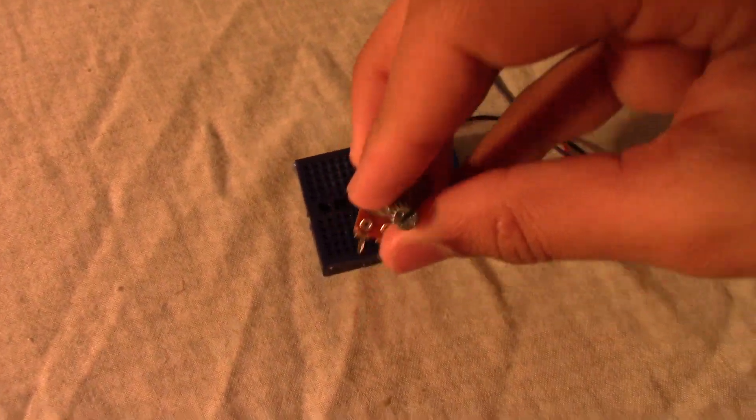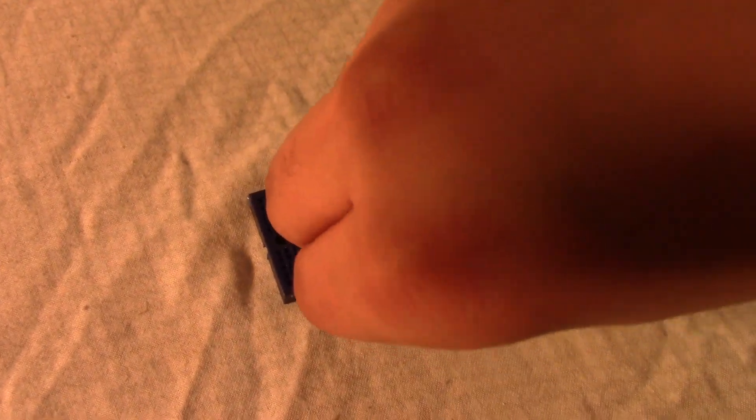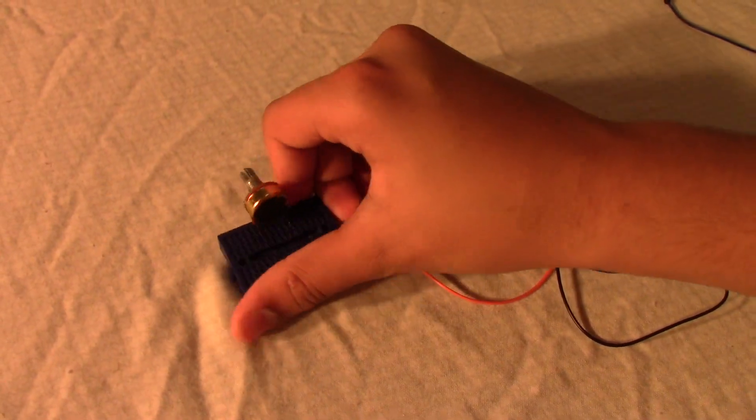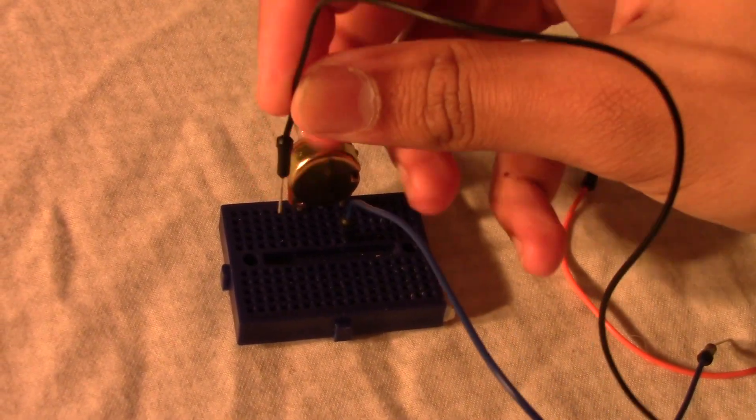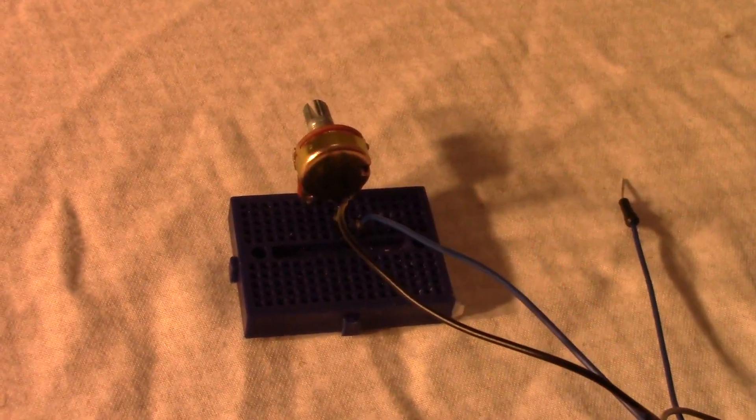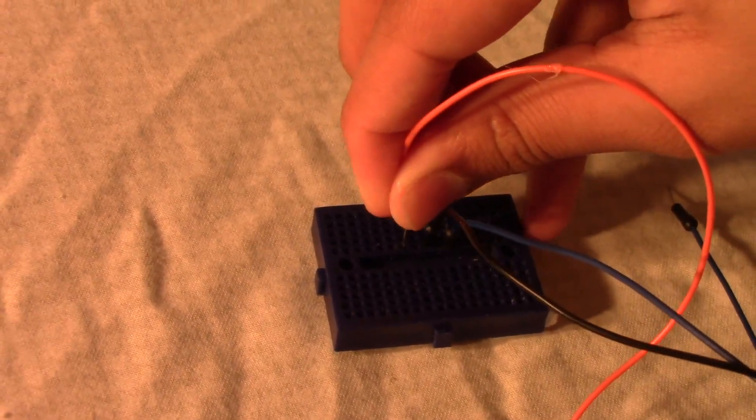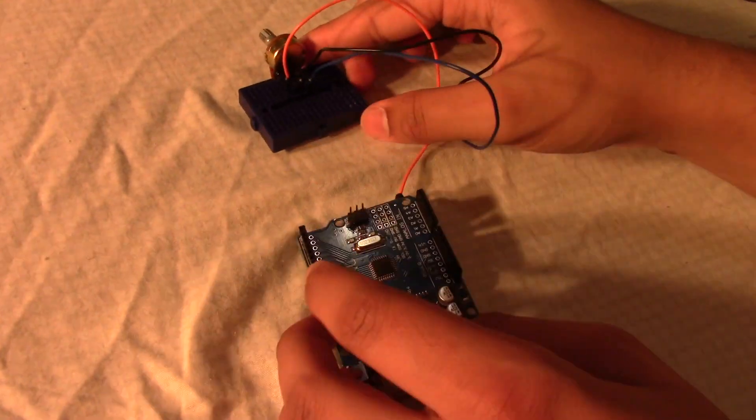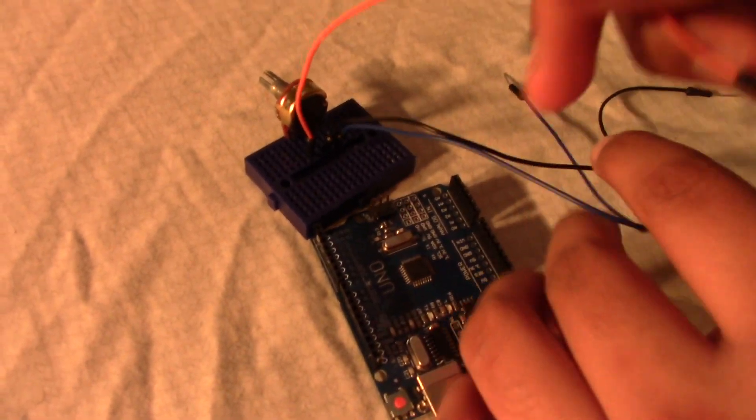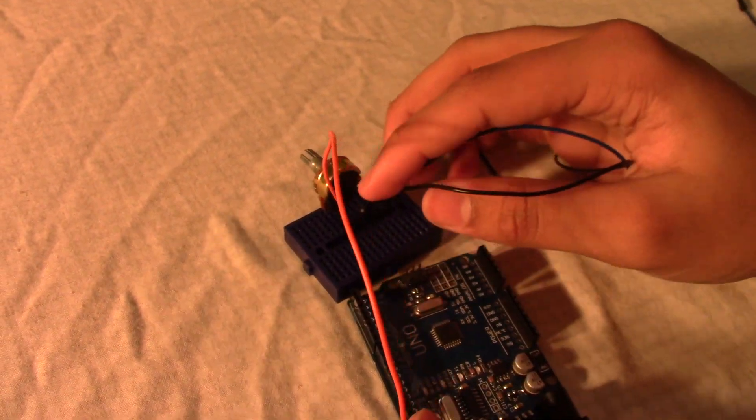The first step is to put your potentiometer anywhere on the breadboard, just like that. Then turn it around and do the following connections: connect one wire on the back of each of the pins of the potentiometer like this, and bring your Arduino microcontroller over here. Connect this wire onto the 5-volt supply, which is all the way on the left.